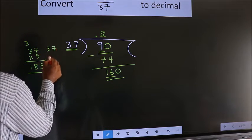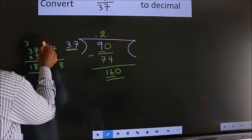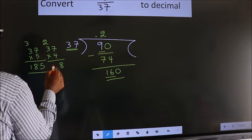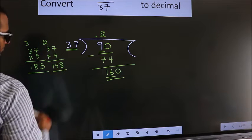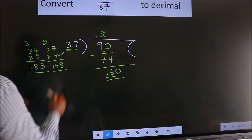So we should go with 4. 4 times 7 is 28. 8, 2. 4 times 3 is 12 plus 2, 14. When we take 5, it exceeds. So we should go with 4.